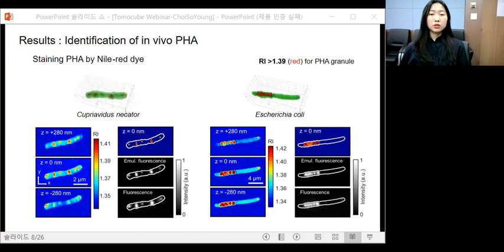First, we performed the identification of the individual PHA granules by the ODT systems. When the cells accumulating PHA granules were subjected to the ODT analysis, we obtained the reconstructed three-dimensional distributions of both cells, and also observed the distinctly high refractive index regions inside each cell, presumably PHA granules.